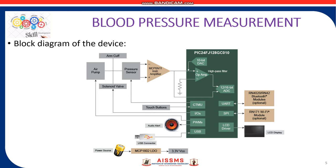The signal from the pressure sensor is conditioned with an instrumentation amplifier before data conversion by an ADC. The systolic pressure, diastolic pressure, and pulse rate are then calculated in the digital domain using an algorithm appropriate for the type of monitor and sensor utilized. The resulting systolic, diastolic, and pulse rate measurements are displayed on the LCD.